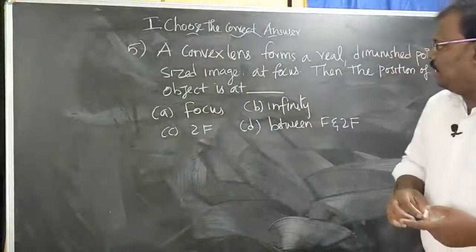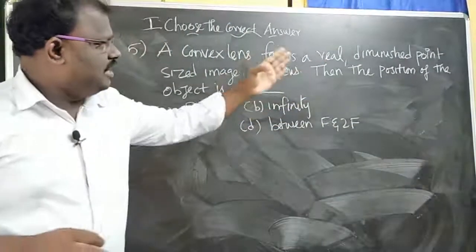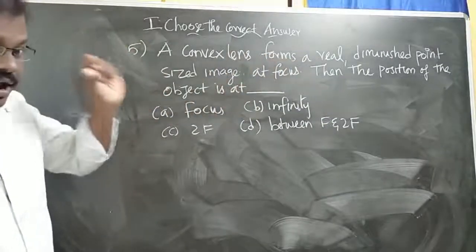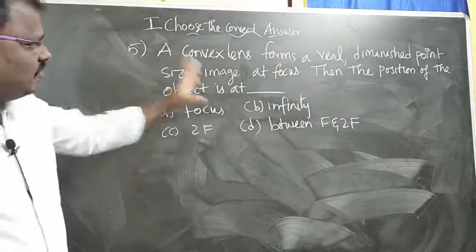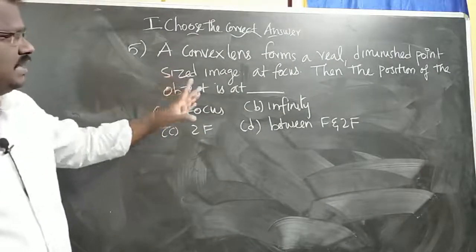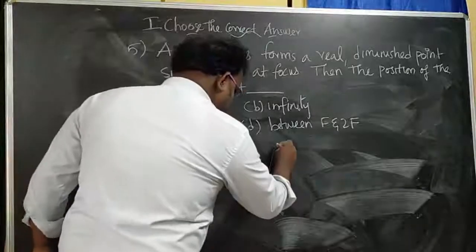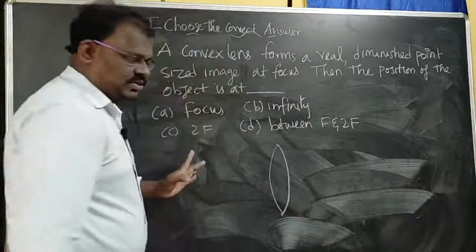A convex lens forms a real, diminished, point-sized image at focus. Then the position of the object is at? Now, what we are doing is a convex lens. This is the convex lens.